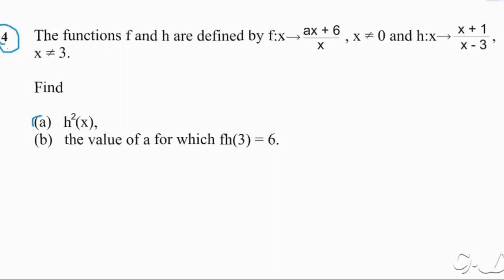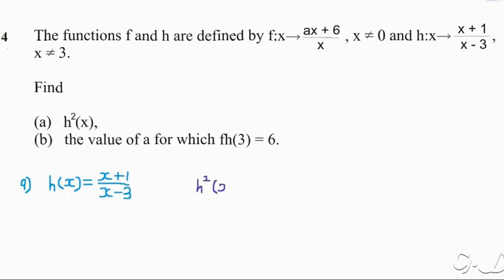We're starting with part A, which asks for h squared of x. We're given that h(x) = (x + 1) over (x − 3). Now, what we have to keep in mind is an important point about what h squared of x actually means.